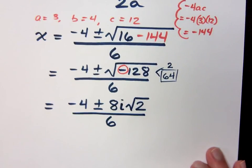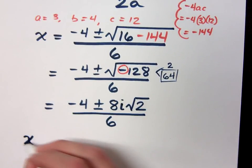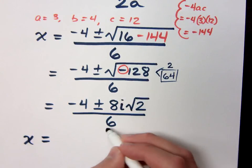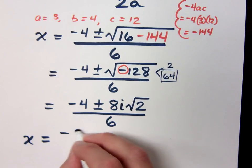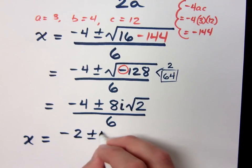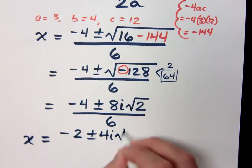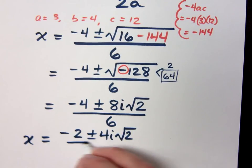We're almost done here. The last thing to do is to simplify this. Notice that every term in the numerator and in the denominator has a common factor of 2. So I can reduce all of these by 2. That's negative 2 plus or minus 4i square roots of 2 all over 3.